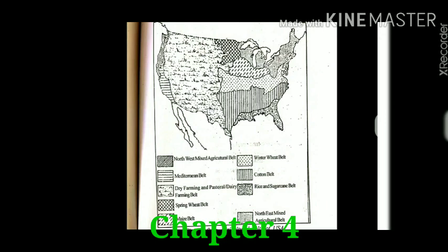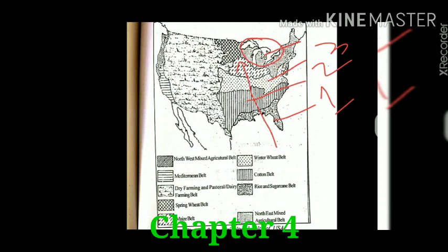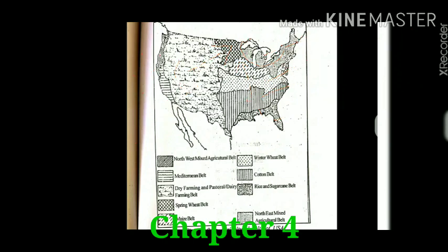We have already discussed the agricultural belts, and now on this map we will identify those belts. Number one is the rice and sugarcane belt; on its northern side is number two, the cotton belt; then number three, the winter wheat belt; then the maize belt. Near the Great Lake region is the northeast mixed agricultural belt. On its western side is the spring wheat belt — number six. Then comes the Mediterranean belt in California, and on the northern part of the western coast is the northwest mixed agricultural belt. The grassland area falls under the dry farming and pastoral dairy farming belt.